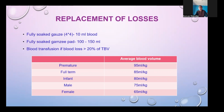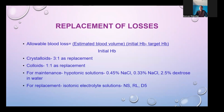Average blood volumes: premature infant ~95 ml/kg, full-term newborn ~85 ml/kg, infant ~80 ml/kg, adult male ~75 ml/kg, adult female ~65 ml/kg. There is a formula for allowable blood loss. Crystalloids should be replaced at a 3:1 ratio and colloids at 1:1. Hypotonic solutions are used for maintenance; isotonic solutions for replacement.